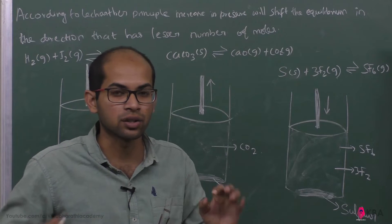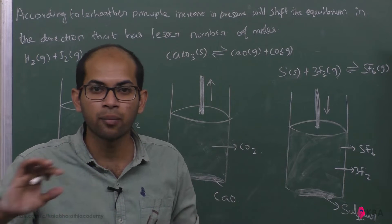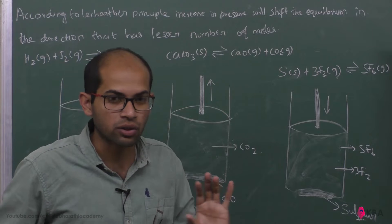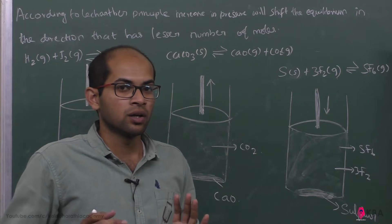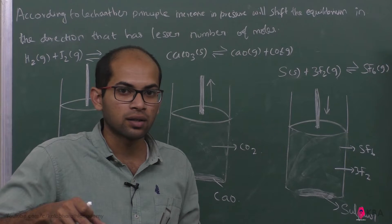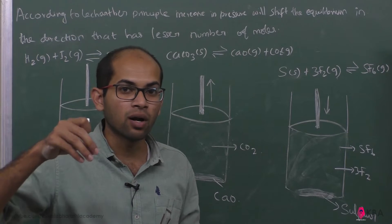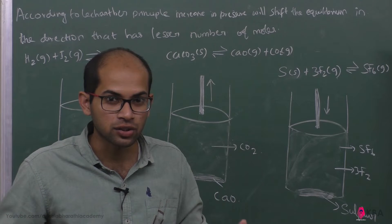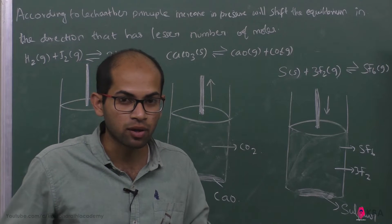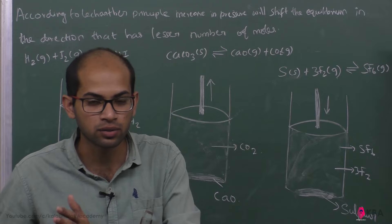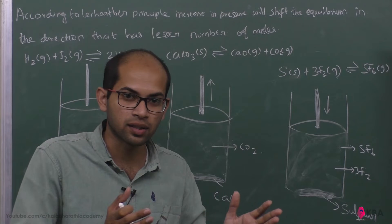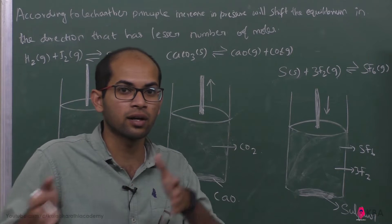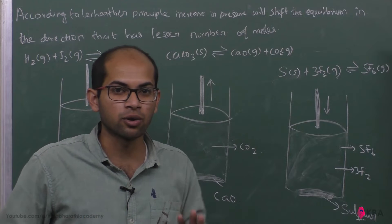We consider both the forward direction (products) and the reverse direction (reactants). Pressure increase and volume decrease shift equilibrium toward the side with fewer moles. Whether the product side has more moles or the reactant side has more moles determines which way the equilibrium shifts.